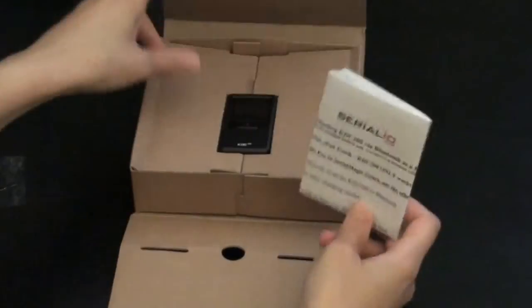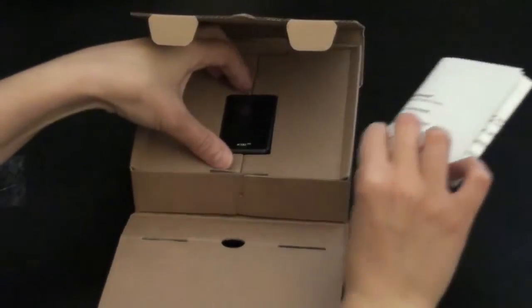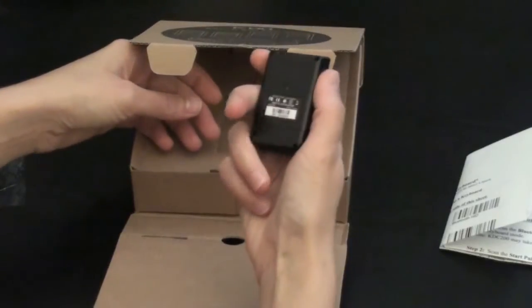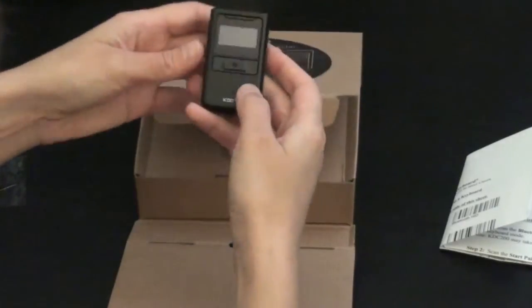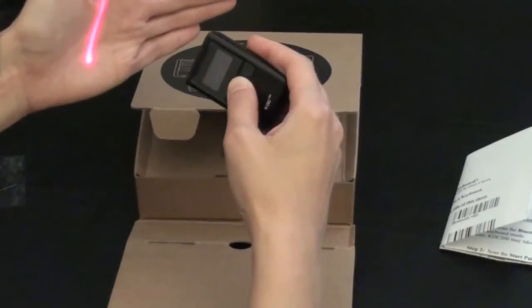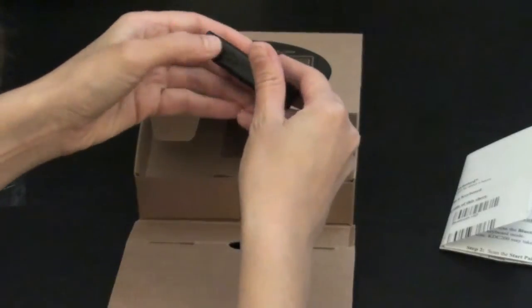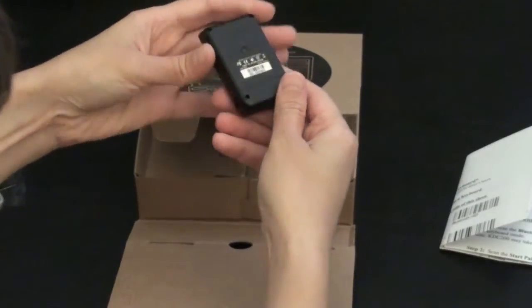We have a setup sheet with barcodes on it and the scanner itself. As you can see, this is very tiny. We have one button for scanning and two buttons on the side for different functions.